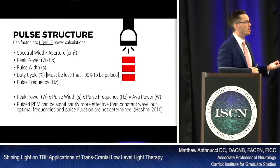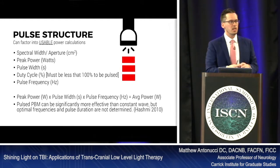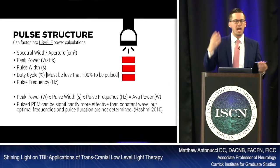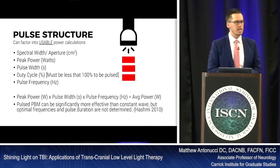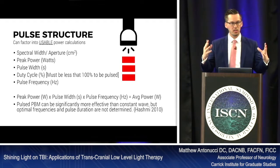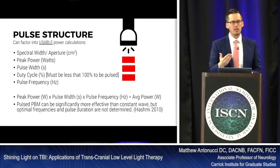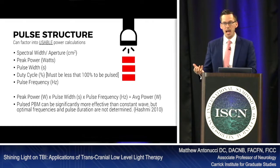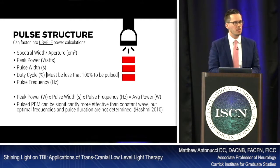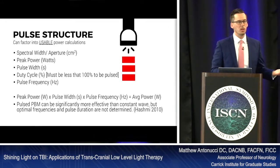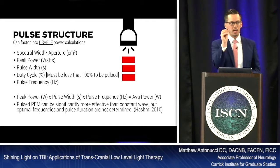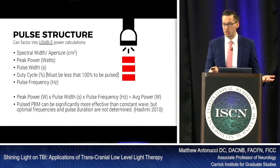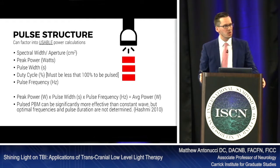You also need to consider spectral width — essentially the aperture of the light, similar to a camera or the pupil. The wider the beam, the more surface area it affects. Many calculations are in milliwatts per centimeter squared, so you need to know the beam size. If a device claims 1,000 watts per millimeter squared but the light is only a nanometer thick, it's actually a very low-powered light source — which illustrates how confusing these specifications can become.